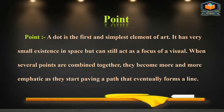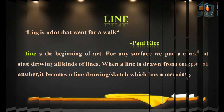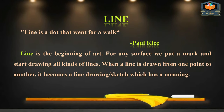The second element is Line. According to Paul Klee, 'Line is a dot that went for a walk.' Line is the beginning of Art. For any surface, we put a mark and start drawing all kinds of lines. When a line is drawn from one point to another, it becomes a line drawing or sketch which has meaning.